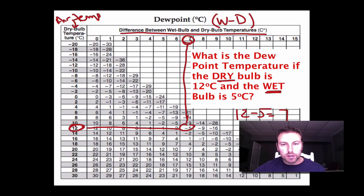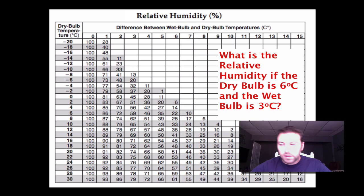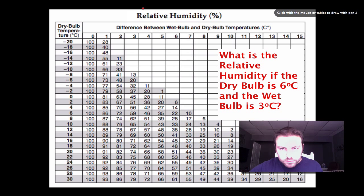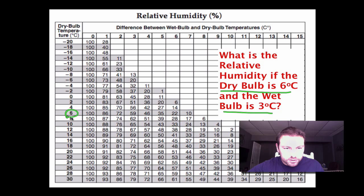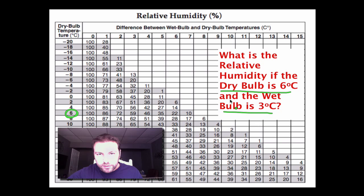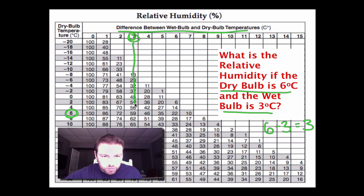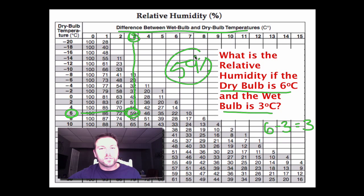We can do the same exact procedure to find relative humidity using the sling psychrometer. We need our dry bulb and wet bulb temperatures. Go to the left side and find the dry bulb temperature of 6 degrees Celsius. Find the difference between the wet and dry bulb: 6 minus 3 equals 3. Find 3 at the top of the chart, move down to where both values meet, and there you go — 59%. Same exact procedure for both dew point and relative humidity.